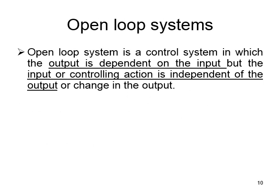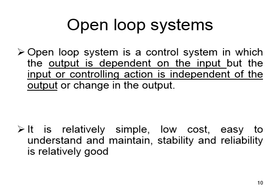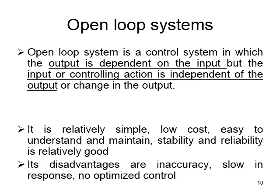In an open loop system, the output depends on the input, but the controlling action is independent of the output. The advantages of an open loop system are that it is simple, low in cost, easy to understand and maintain, and stability and reliability are relatively good. The disadvantages are that it is inaccurate, very slow in response, and not optimized in control.